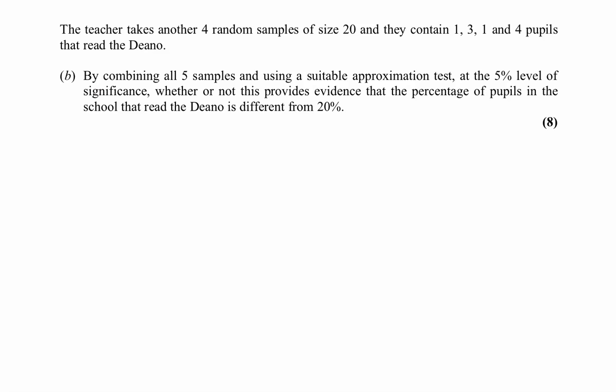The next part tells us the teacher takes another four random samples — five in total — with the extra four containing 1, 3, 1, and 4 pupils reading the Dino. We combine all five samples and use a suitable approximate test at the 5% level. The null hypothesis remains P equals 0.2, and the alternative is P not equal to 0.2. The combined test statistic is binomially distributed with parameters 100 and 0.2, since we now have 100 trials and the probability of success is still 0.2.